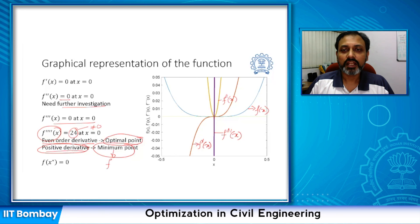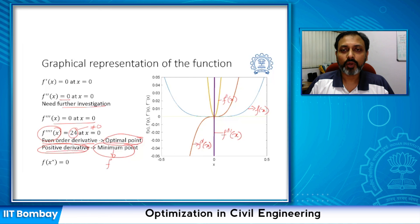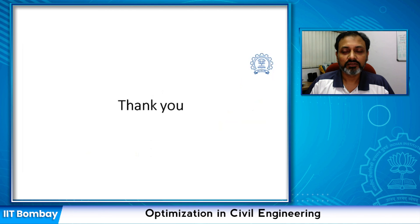In this lecture we only considered optimization problems with one variable. However, there are optimization problems with more than one variable — these are known as multi-variable optimization problems, which we will discuss in our next class. Thank you and see you in the next class.